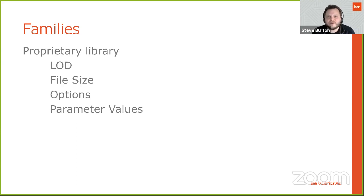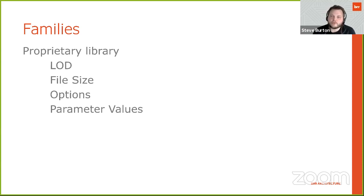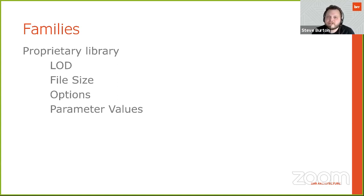This also allows you to build in whatever options you need. If a client only utilizes two types of chairs in their office and you're modeling that environment, you can have only those two options to toggle between instead of having way more or fewer options than you need. And lastly, you're able to specify all of the parameter values — no extraneous parameters pointing to irrelevant information, but exactly what you need to not only have the families work the way you want, but to schedule all of the information precisely the way you want. As a student you're able to use really whatever you want in your models, whereas professionally a lot more goes into it.